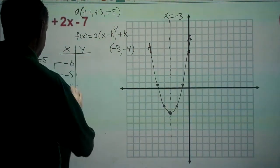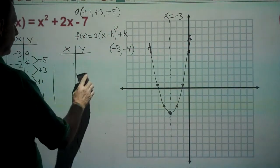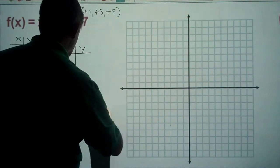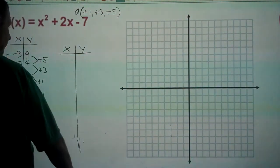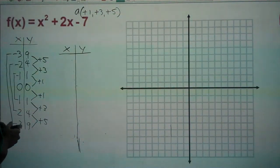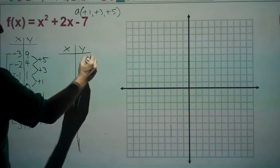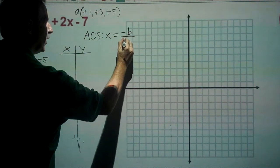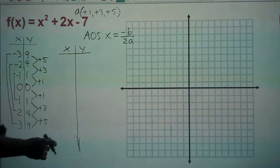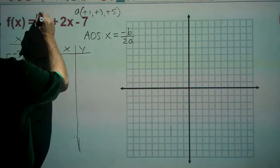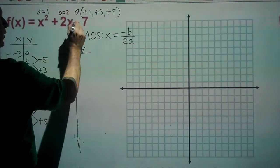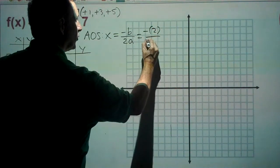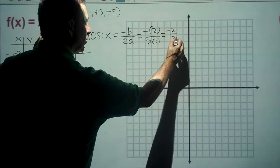Next we have f(x) = x² + 2x − 7, which is standard or general form. To find the vertex we use the axis of symmetry formula: x equals negative b over 2a. Here a equals 1, b equals 2, and c equals negative seven. So the axis of symmetry is x = negative 2 over 2(1) = negative 1.